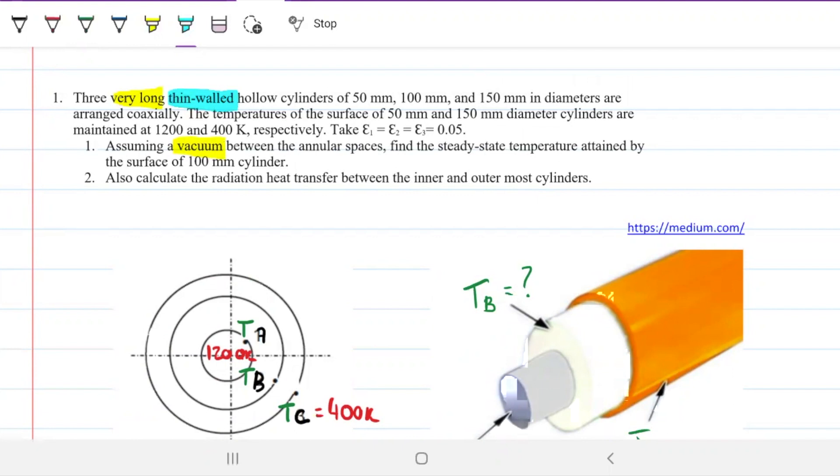It being thin walled means that the conduction is very small or negligible. In our case here, we're going to ignore it.